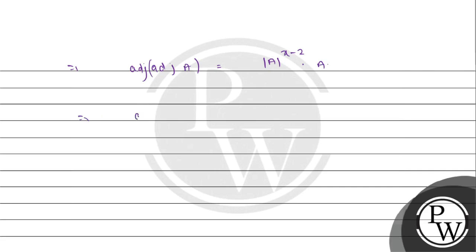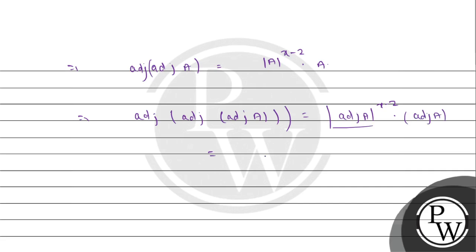So what do we do here? A into adjoint of A — how do we handle this? Adjoint of A. This value: determinant of A to the power x minus, so to the power x minus 2, and the adjoint of A. This value: determinant of A to the power x minus 1.